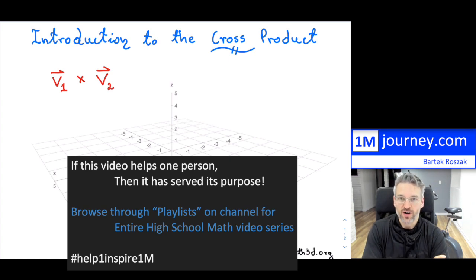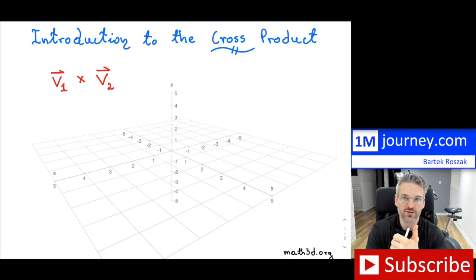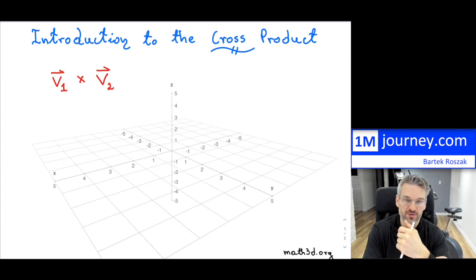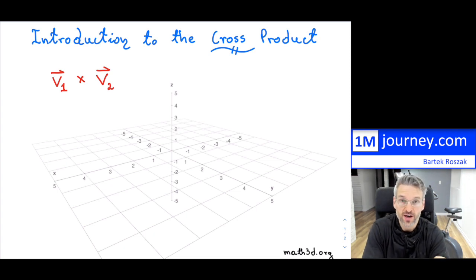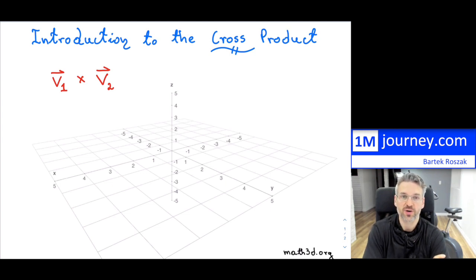As you move along in your study of vectors, you're going to learn about addition of vectors, subtraction of vectors, multiplication by a scalar, and the dot product — which was a new operator you had to learn. And here's the last kind of operator on vectors that you would learn, which is the cross product.